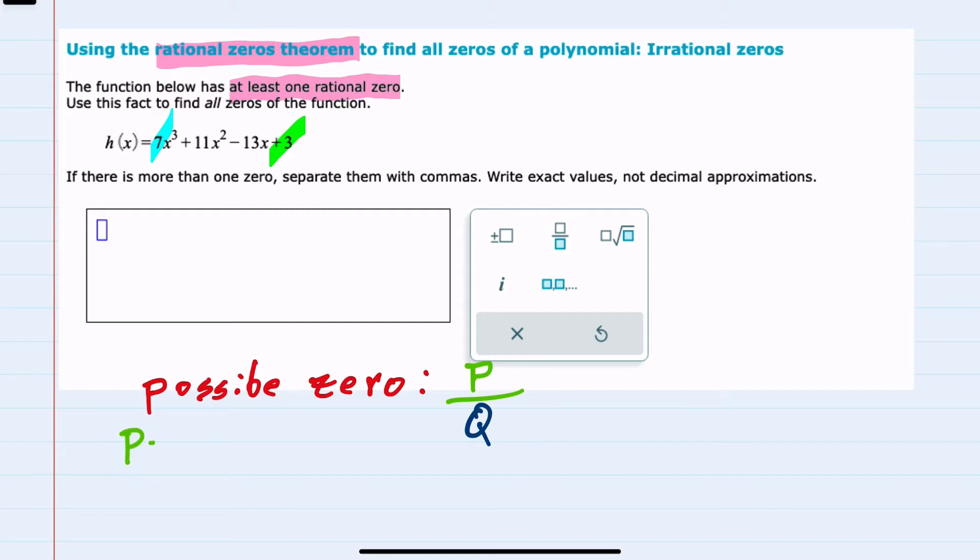So here are my possible p values, the factors of three: plus or minus one and plus or minus three. And for q, the possible factors of seven are plus or minus one and plus or minus seven.